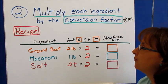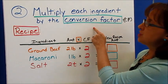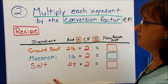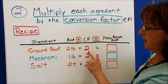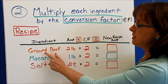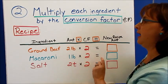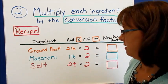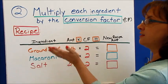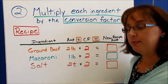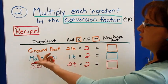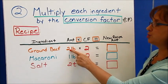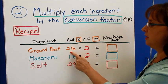Step two: multiply each ingredient by the conversion factor. Now that we have our conversion factor of two, we need to take each ingredient and multiply. In step one we divided; in this step we multiply. So let's say our recipe has ground beef — we've got two pounds of ground beef.